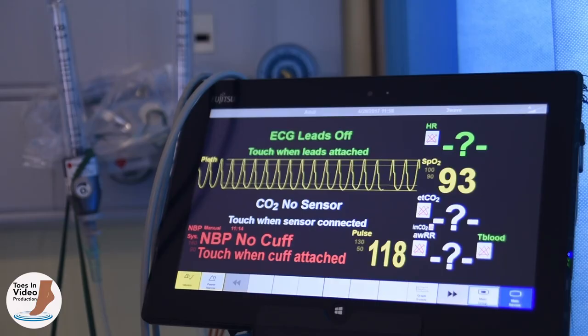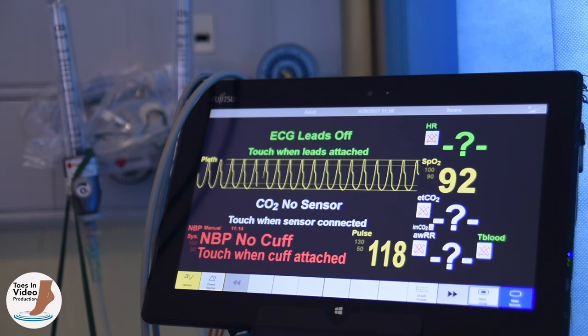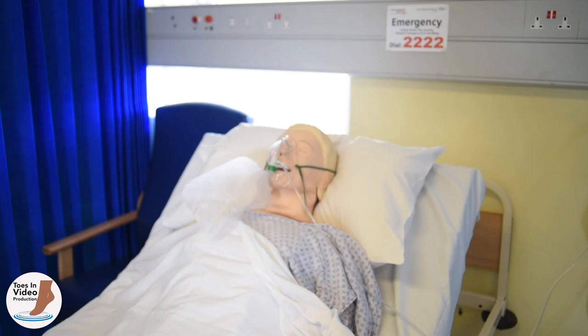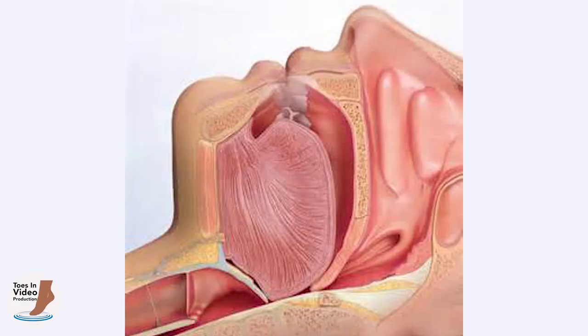Cyanosis is a late sign of hypoxia and may not be a visible sign until saturations are well below 90%. Unconscious adults in a hospital bed in a semi-recumbent position or sat in a chair are likely to have an obstructed airway due to loss of pharyngeal tone and the head tipping forward. Unconscious adults lying flat on their back are likely to have an obstructed airway due to loss of pharyngeal tone and the tongue slipping backwards.